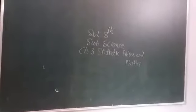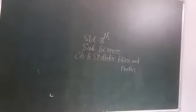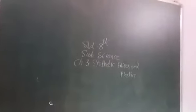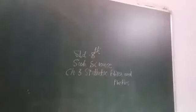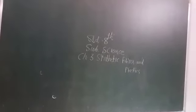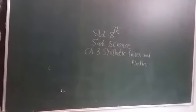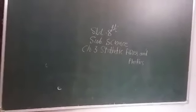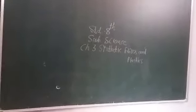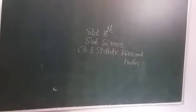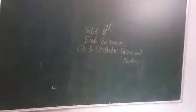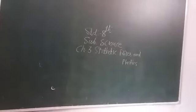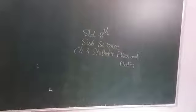Number four, ropes for rock climbing is made of blank. Nylon. Ropes for rock climbing is made of nylon. Number five, rayon fibers are known as blank. You have to write artificial silk. Rayon fibers are known as artificial silk. Number six, rayon is mixed with blank to make carpets. Rayon is mixed with wool to make carpets.